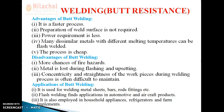As per the applications of butt welding: it is used for welding metal sheets having the same cross-sectional area, bars, rod fittings, etc. — basically it is used to join two bars. Number two, flash welding finds application in automotive and aircraft products; in automobile industries this welding process is used very extensively. Lastly, it is also employed in household appliances, refrigerators, and farm implements — so it can be used in home appliances as well.